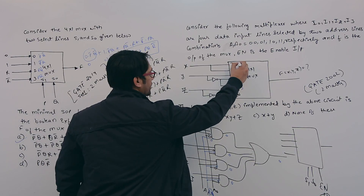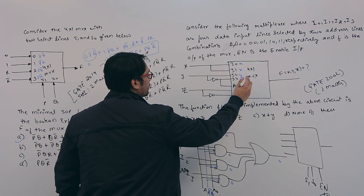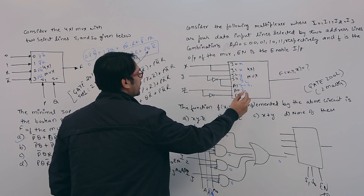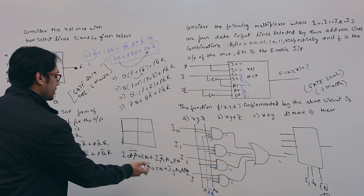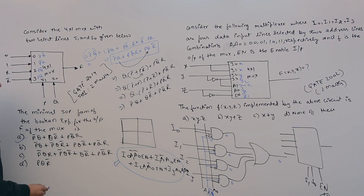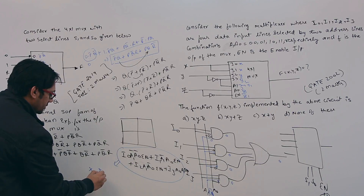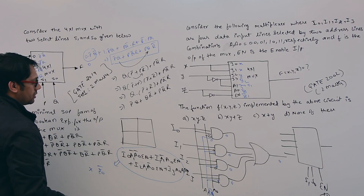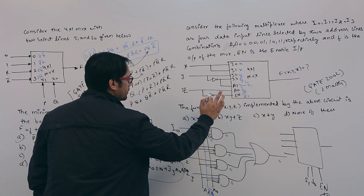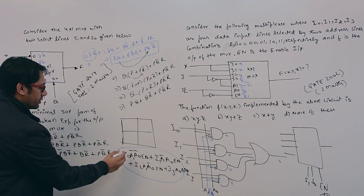From the circuit: for I0 we pass X, for I1 we pass X, for I2 we pass Y, for I3 we pass Y'. For A1 we pass Y', for A0 we pass Z, and for enable we pass Z'. Substituting into the equation: for the first term, I0=X, A0=Z, so A0'=Z', A1=Y' so A1'=Y, and EN=Z'.